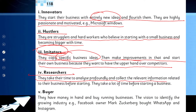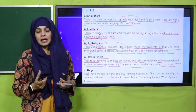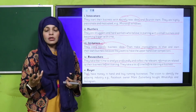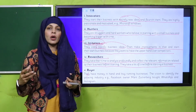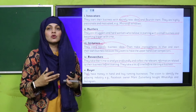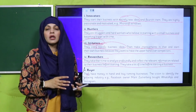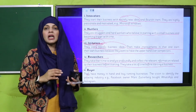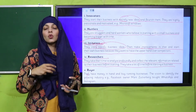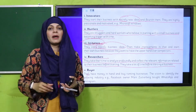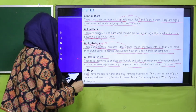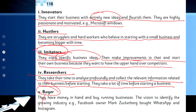Then come the researcher entrepreneurs. They take their time to analyze profoundly and collect relevant information related to their business before starting. They spend a lot of time before starting a business. Researcher entrepreneurs first do a lot of research on their idea — they look at pros and cons, whether they might face loss or gain, whether the loss will be more or the profit will be more — and only after extensive research do they start their business.